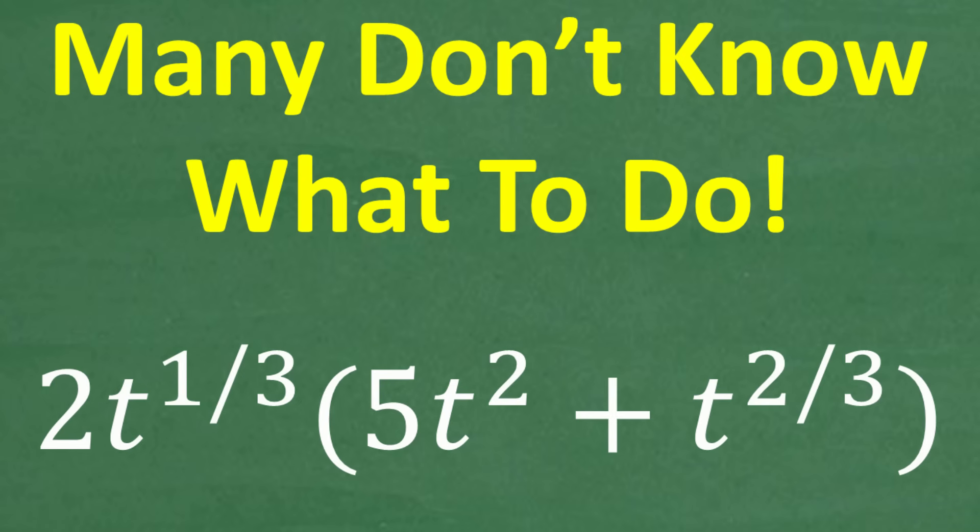Let's see if you can answer this basic algebra question. We want to multiply 2t to the 1/3 by 5t squared plus t to the 2/3 power. What is this equal to? If you can figure this out, put that into the comment section, and then I'm going to fully explain how to do this problem.